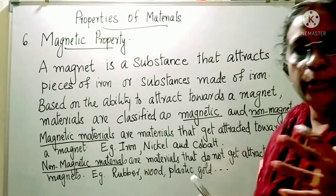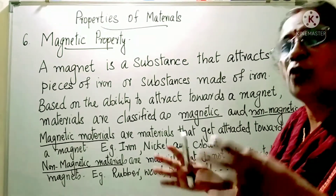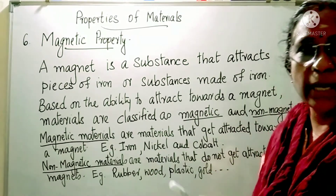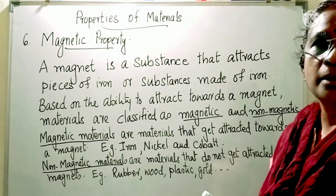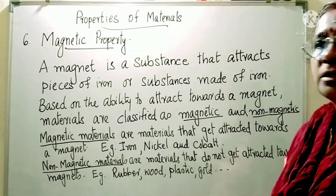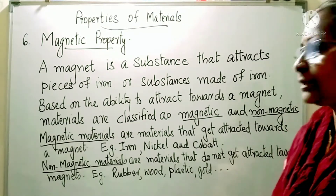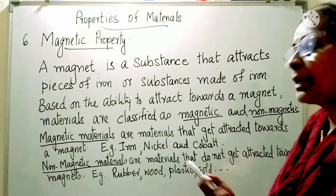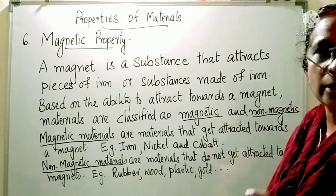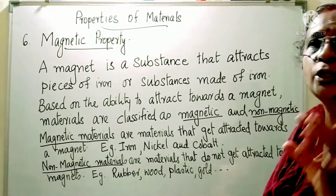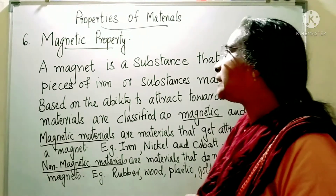Non-magnetic materials are so many around us — like plastic, rubber, and glass. All these things do not get attracted towards the magnet, so they are called non-magnetic materials.